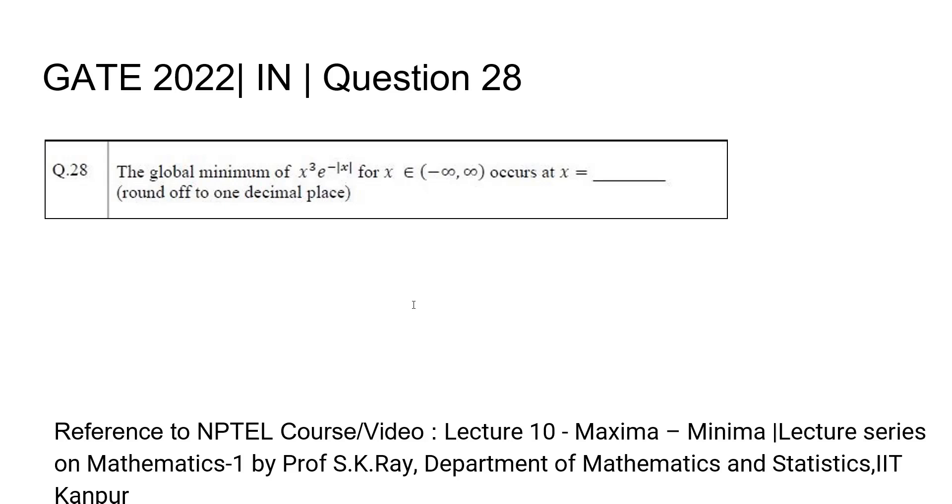Question 28 from Instrumentation Engineering GATE 2022. The global minimum of x cubed times e to the power minus mod x for x belonging to the open interval minus infinity to infinity occurs at x equals what? The answer is supposed to be rounded off to one decimal place.